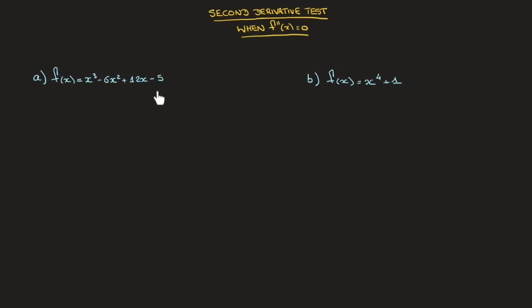Looking at the first function, to find any stationary points it has, the first thing we need to do is find any values of x at which its derivative equals to zero. So we'll start by finding f'(x), the derivative, and using the power rule we quickly find that's equal to 3x² - 12x + 12. The x-coordinates of any stationary points are found by solving f'(x) = 0.